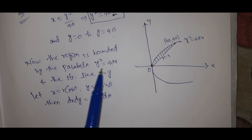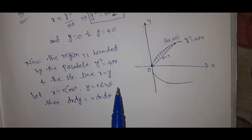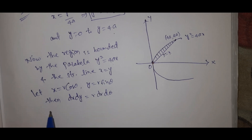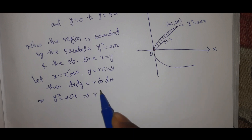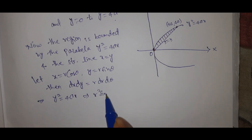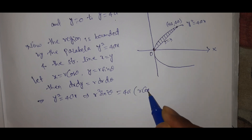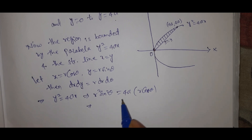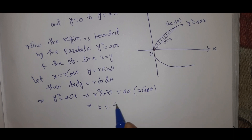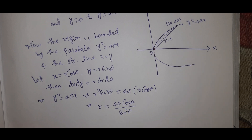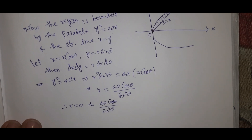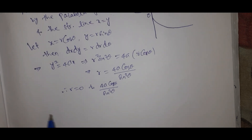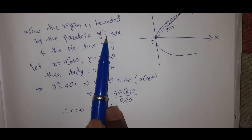The parabola is y²=4ax. Substituting x = r cosθ and y = r sinθ into y²=4ax gives r² sin²θ = 4a·r cosθ, so r = 4a cosθ/sin²θ. This gives us the upper r-limit from the parabola. So r goes from 0 to 4a cosθ/sin²θ.